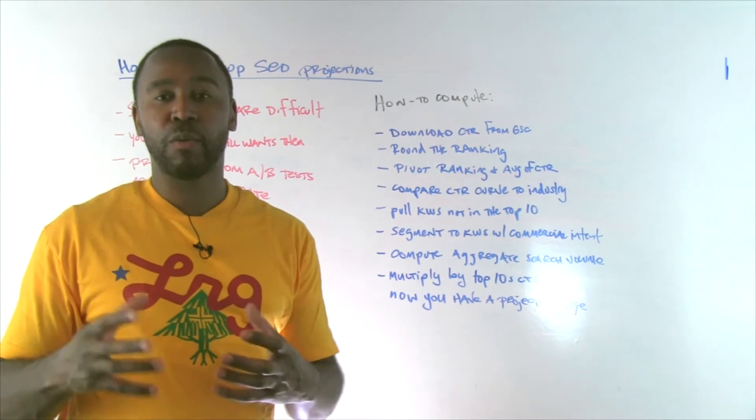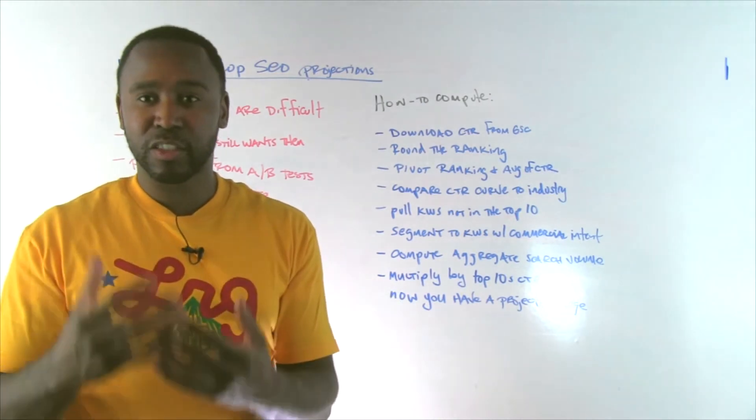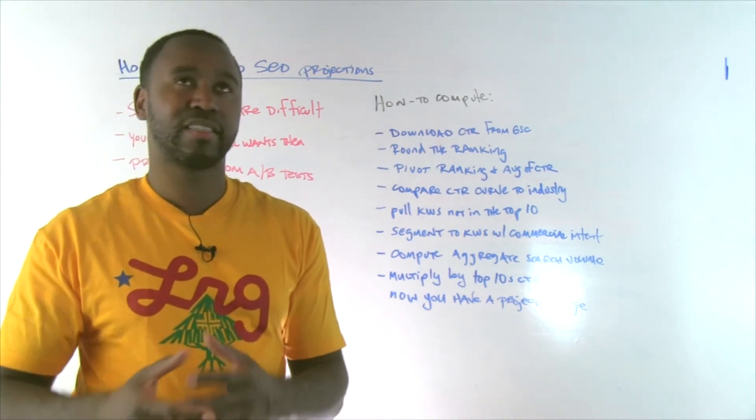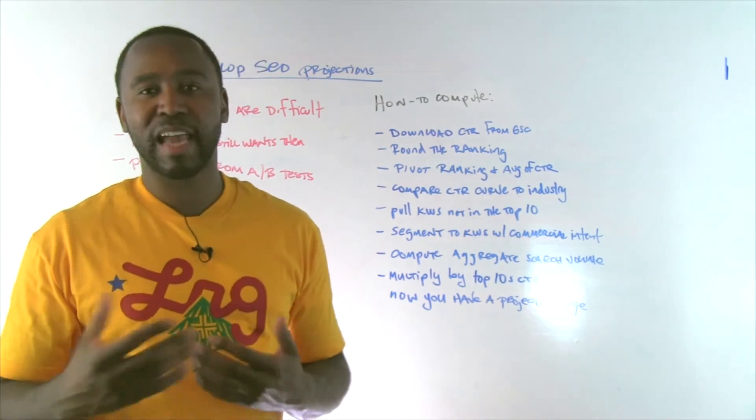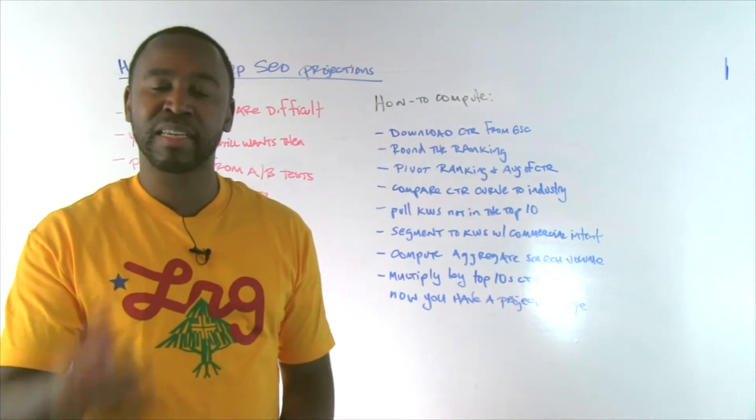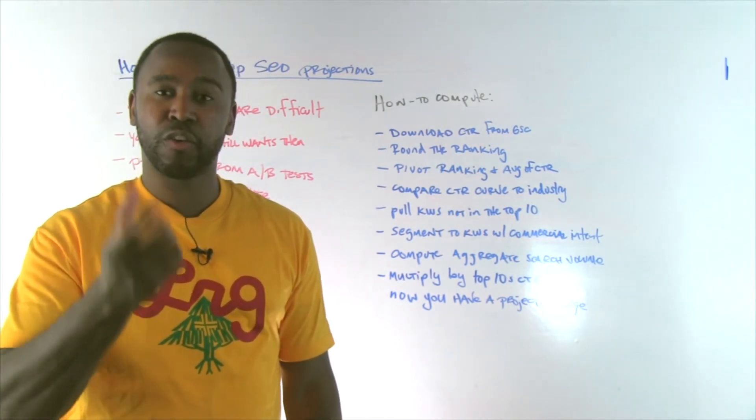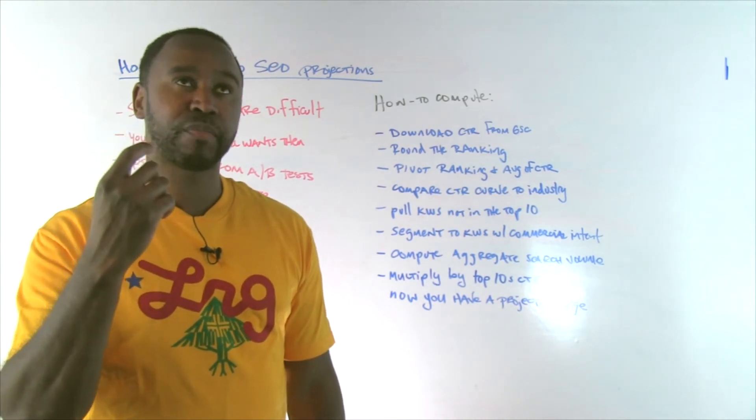At that point, once you've got your keywords set, aggregate those into what the search volume is for those sites. So let's say you've got 50 keywords and the aggregate search volume is 100,000. That's the value that you're going to use for computing your projections.